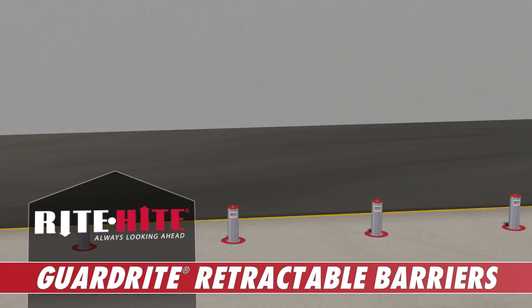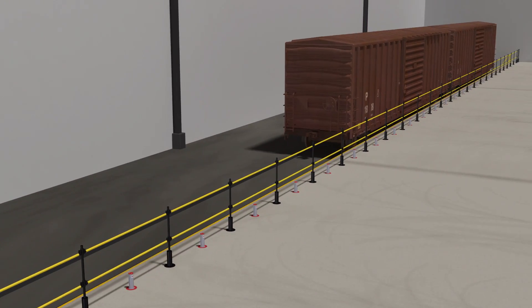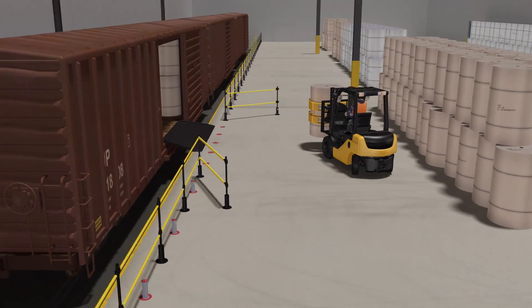GuardRite retractable barriers are perfect for any area of your plant that requires a heavy-duty safety system while also allowing unrestricted access when needed.